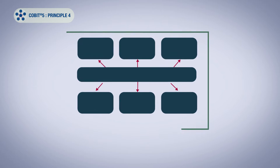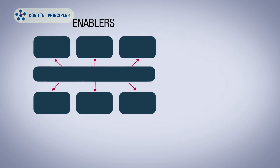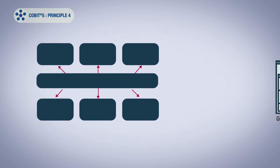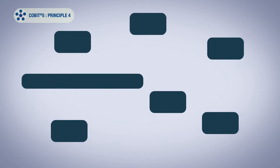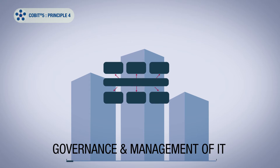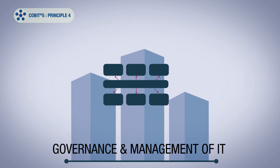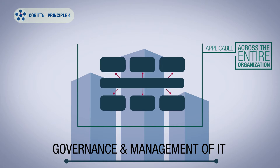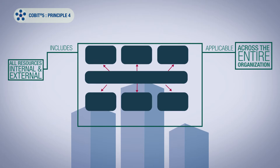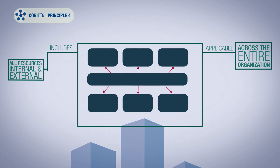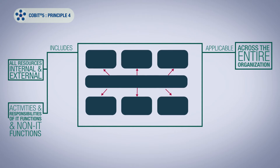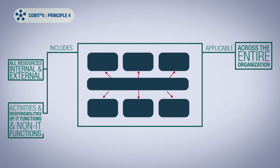COBIT-5 provides some help here in the form of enablers, which are factors that influence the outcome of the governance and management activities. In fact, these enablers can be taken individually or collectively to help us understand a comprehensive approach to governance and management of IT across the organisation. Enablers are applicable across the entire organisation and include all resources, internal and external, that are relevant to governance and management of information and related technology. It's worth bearing in mind that enablers include the activities and responsibilities of IT functions and non-IT business functions as well.